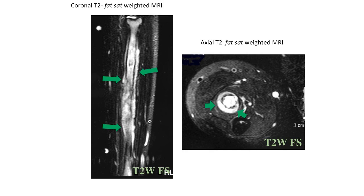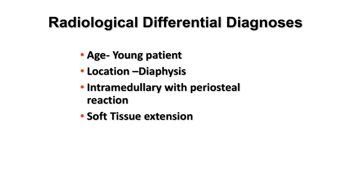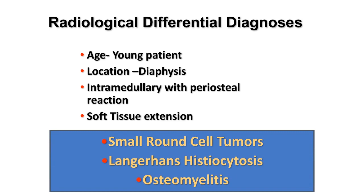Coronal and axial MR T2 with fat suppression shows a marrow-occupying tumor showing bright T2 signal with cortical destruction and extra-osseous extension surrounding the cortex. The radiological differential diagnosis is based upon the patient's age, who is young and adolescent, location of the lesion at the diaphysis, with interrupted periosteal reaction, soft tissue extension, and includes small blue round cell tumors, Langerhans histiocytosis, and osteomyelitis.